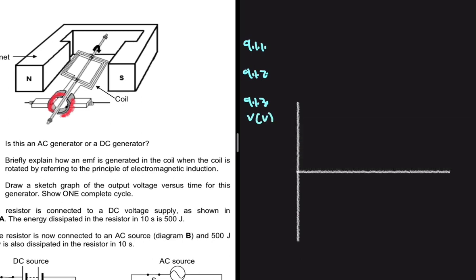On the Y axis we have the potential difference, and on the X axis we have the time in seconds. Now we just need to sketch our graph for one cycle — something like this. And then you get all your marks for just doing that.